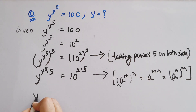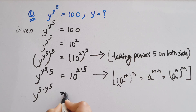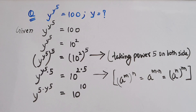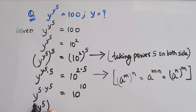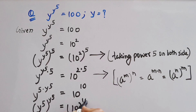Now y to the power 5 into y to the power 5 equals to 10 to the power 10. We can write y to the power 5, whole to the power y to the power 5, equals to 10 to the power 10.